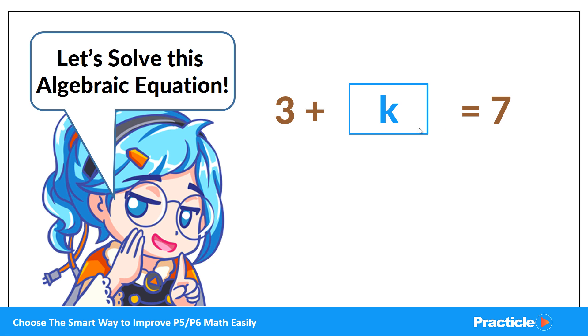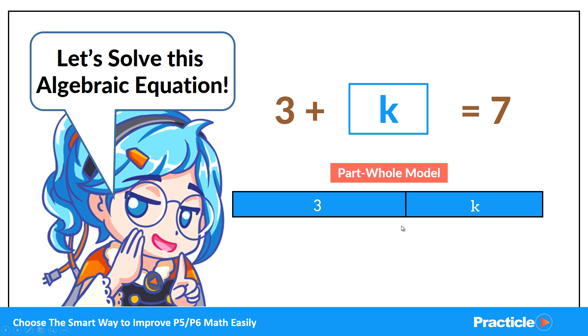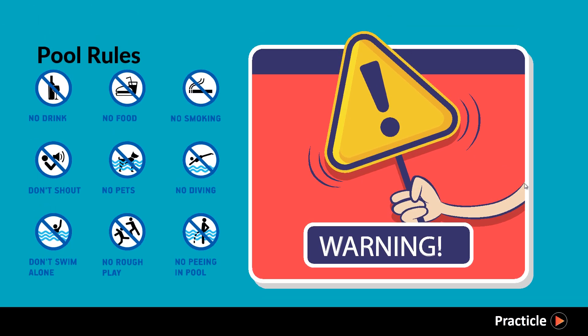So if we were to draw a model for this, it would look something like this. 3 plus K, everything will add up to give you a total of 7. Now that we have a simple idea of what algebra is and what an algebraic equation is, let's move on to learn some algebra rules.